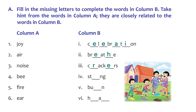The fourth hint is 'B' — a bee stings us, so the word is 'stings'. The fifth hint is 'fire' — what does fire do? It 'burns'. And the last hint is 'ear' — what do we do with our ear? We 'hear' — H-E-A-R. Now we are going to learn a little bit more about plural forms.